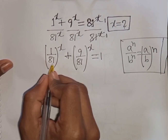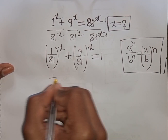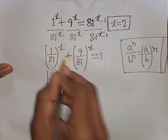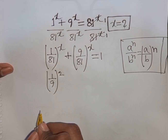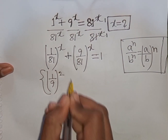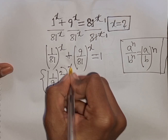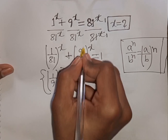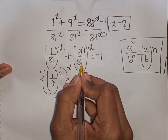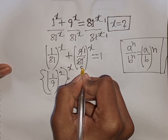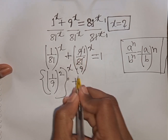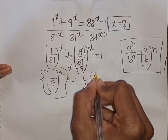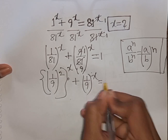Now 1 over 81 can be written as (1/9) squared, since 1 squared is 1 and 9 squared is 81. Then this first bracket can be written as the second bracket power x. So we have (1/9) bracket power x is equal to 1.